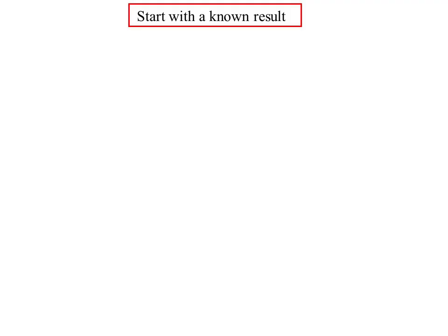Another key technique: start with a known result. Because if you know something is true, you can move things around and it will still be true. For example, prove that A squared plus B squared plus C squared is always greater than AB plus BC plus AC.